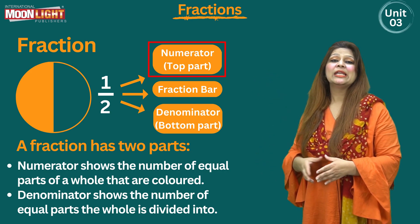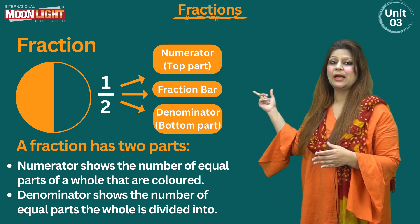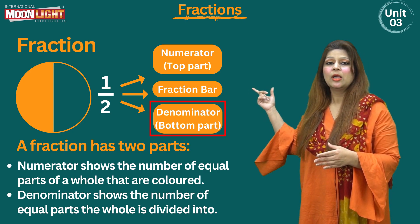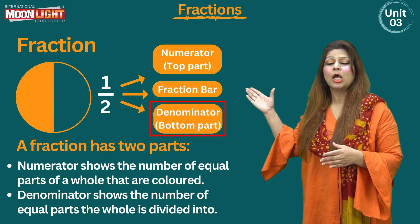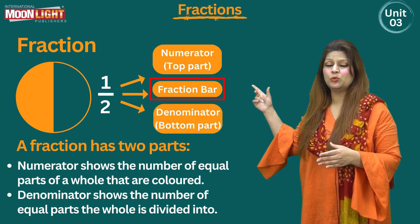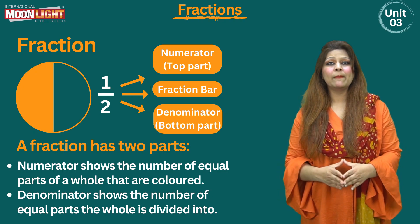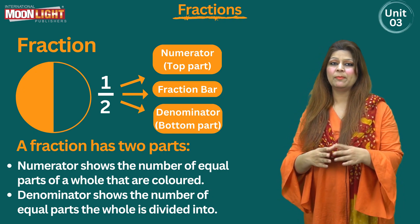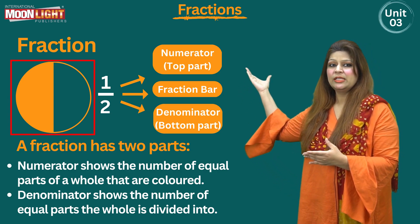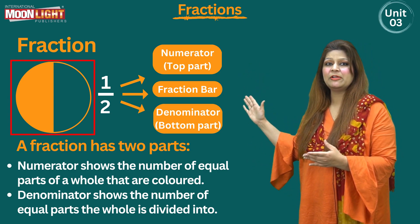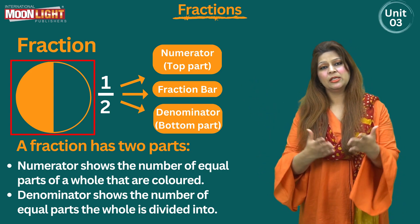The number two here is the denominator, and the straight line in between is called the fraction bar. In figure or shape form, this is a circle divided into exactly two equal parts — can you tell which one is colored or shaded?